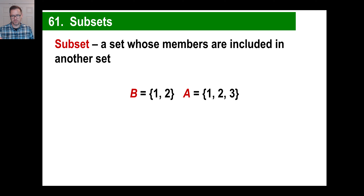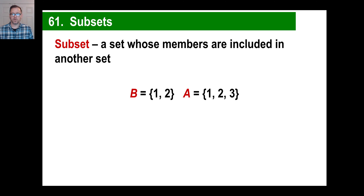So let's look at two sets we have. There is set B with the fancy parentheses that includes 1 and 2, and there's set A. It has 1, 2, and 3.